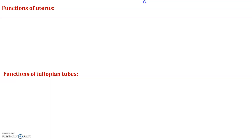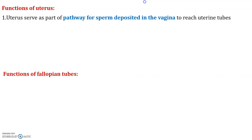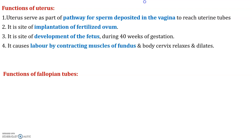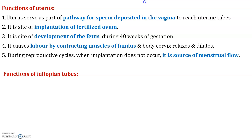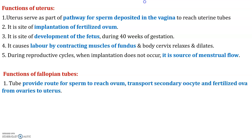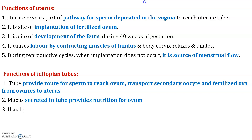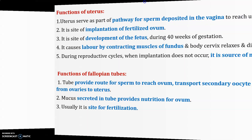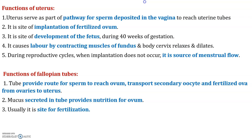The functions of the uterus include: first, passage for sperms; second, implantation of the fertilized ovum; and third, development of the fetus. The functions of the fallopian tubes include: transporting sperm from the uterus to the ovum or ovary, providing secretion and nutrition for the ovum, and serving as the site of fertilization.